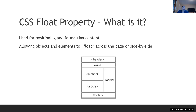Every time your browser reads your page it reads the code top to bottom, left to right, and depending on how it reads it, it can push things to the left and the right and let things sit side by side. So even if you had two sitting to the left and one to the right, depending on the order they were written in, they could essentially achieve a three-column layout.